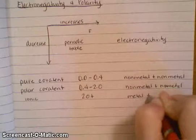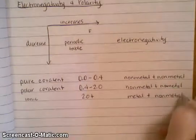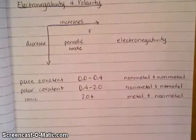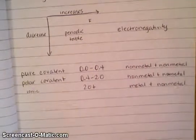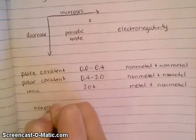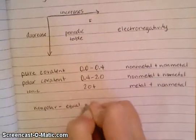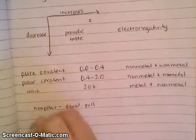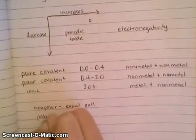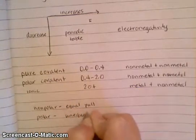I mentioned polar and nonpolar. What is the difference in those? Well, if something is nonpolar, you will have equal pull with your electrons. If it's polar, it's just the opposite. You will have an unequal pull.